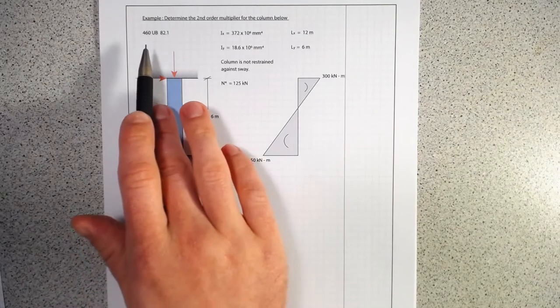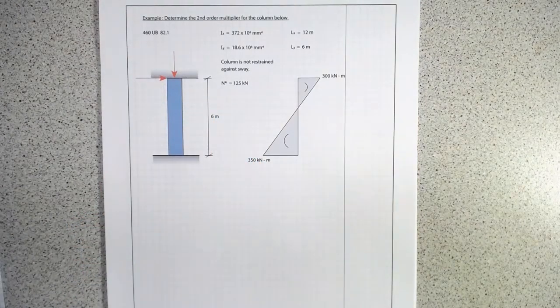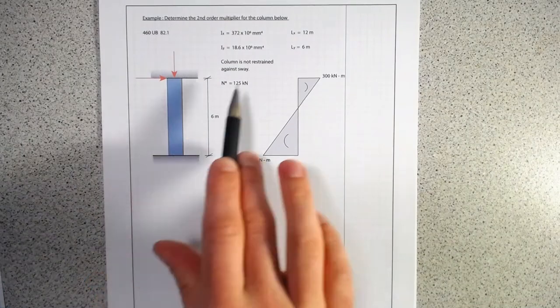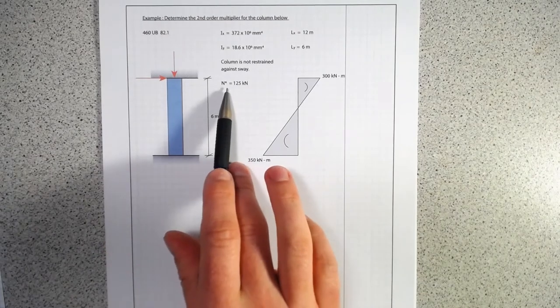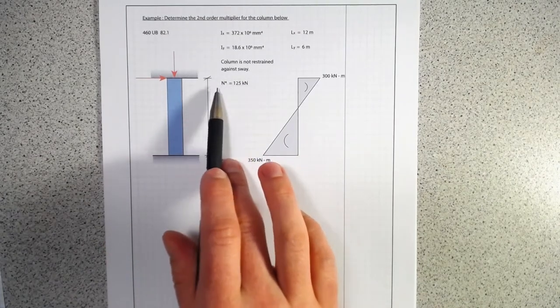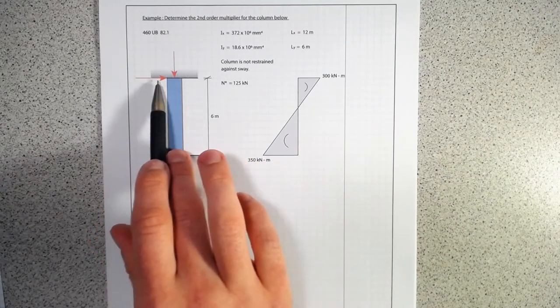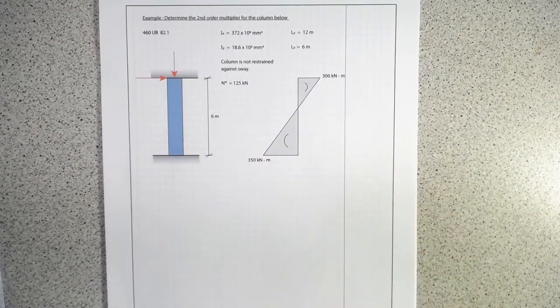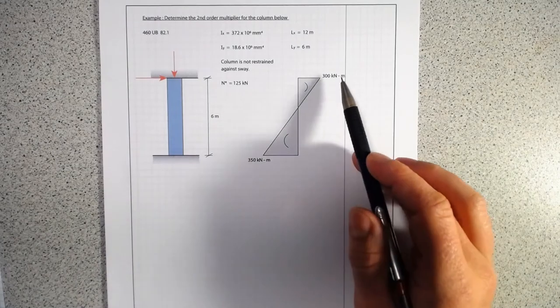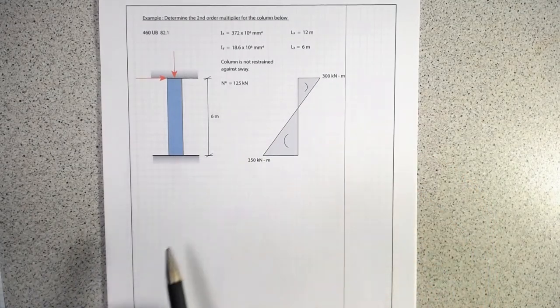We have a 460 by 82 UB. You can see that it's a sway system. It's got a compression load of 125 kilonewtons and a lateral force which generates a bending moment distribution of 300 kilonewton meters and 350.